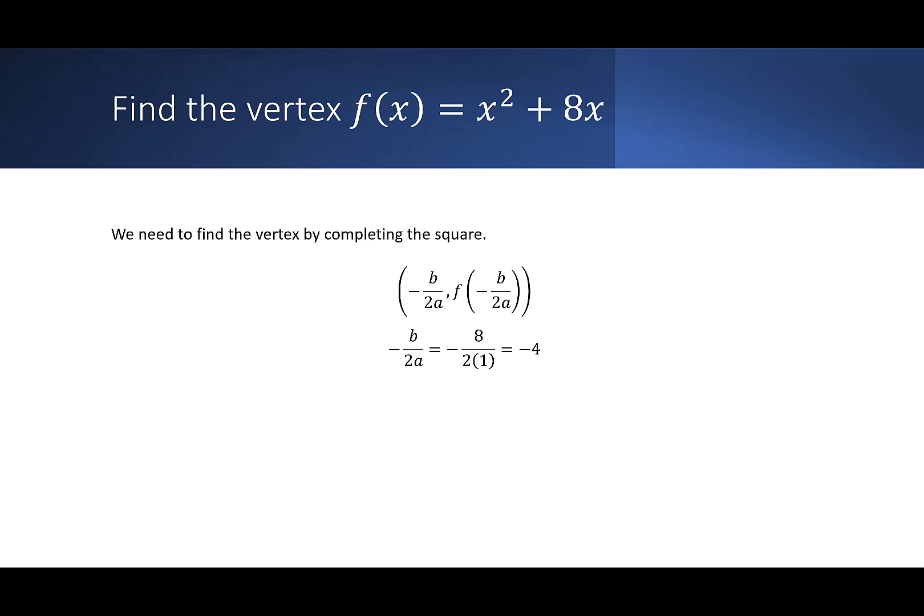To find the y-coordinate, I need to plug the -4 back into my original function. This gives me (-4)² + 8(-4). (-4)² is 16. 8 times -4 is -32. 16 - 32 gives me -16. And I once again got the same vertex of (-4, -16), and I didn't have to complete the square.